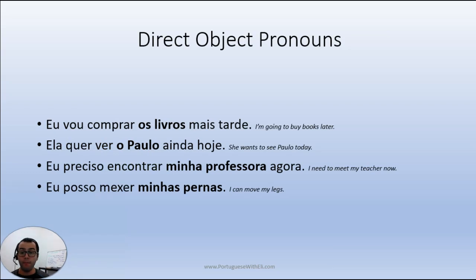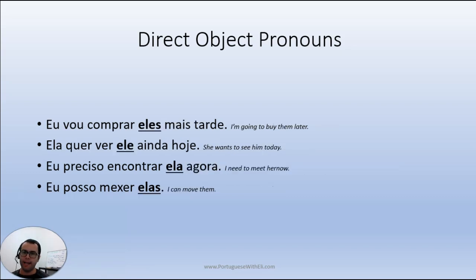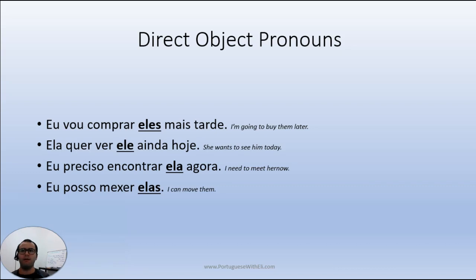And now some more. The same sentences, but with a twist: you can use the pronouns ele, ela, eles, elas to replace the nouns, because in everyday conversation that's how we speak. 'Eu vou comprar eles mais tarde.' More correctly: 'eu vou comprá-los.' More colloquially: 'eu vou comprar eles.' Each of these colloquial forms is very natural and that's how Brazilians speak in everyday conversation — sometimes they would use the other ones, but this is more common.